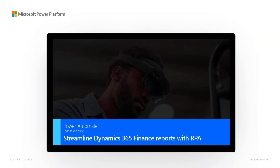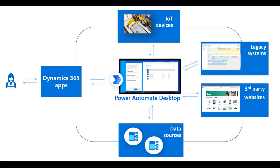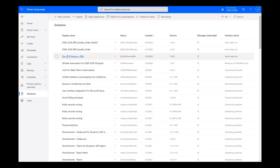Power Automate Feature Overview: Streamline Dynamics 365 Finance Reports with RPA. When you integrate robotic process automation into the streamlined processes of Dynamics 365 Finance, you can easily configure and automate even more manual processes, allowing finance professionals to focus on more critical strategic tasks.